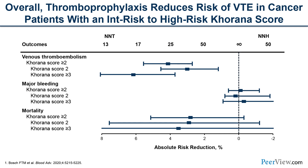Taking together all the clinical trials, including low molecular weight heparins and DOACs, in a large pooled analysis, the number needed to treat to prevent 1 VTE in high-risk cancer patients is approximately 25 for a Khorana score of 2 or higher, and as low as 17 for a score of 3 or higher — which is considered very acceptable in the primary prevention setting. Major bleeding was not a big concern in this large meta-analysis; the number needed to harm is not significant. Although none of these studies were designed to show an impact on mortality, they all showed a trend towards improved mortality with no concern for worse mortality — very reassuring safety signals.